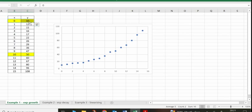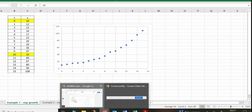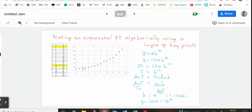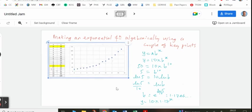And I'm going to make a model here by just taking a couple of key points. I definitely know that I want it to go through 0, 10. And I also think that 10, 50 is a good point. So I'm going to take those two points and I'm going to try and build a model on that. So let's do that.